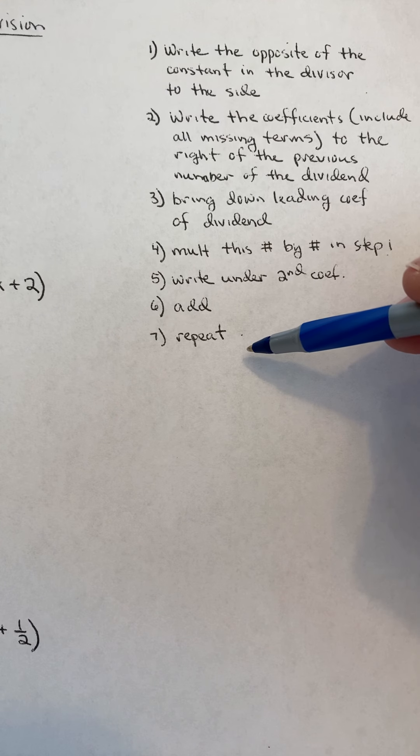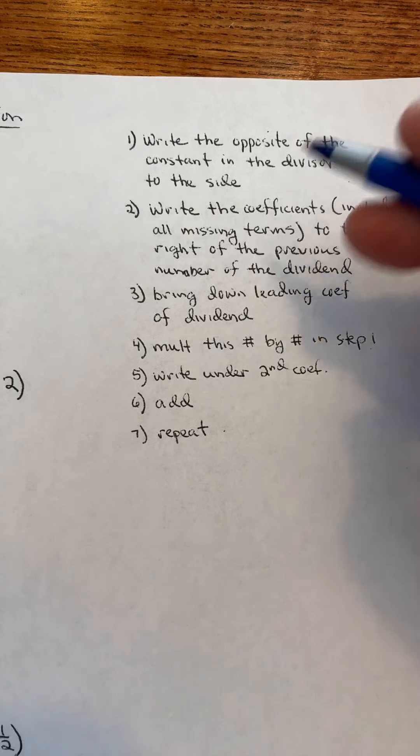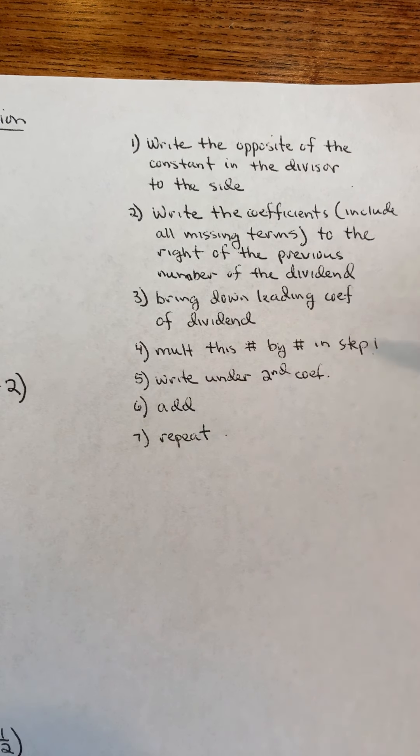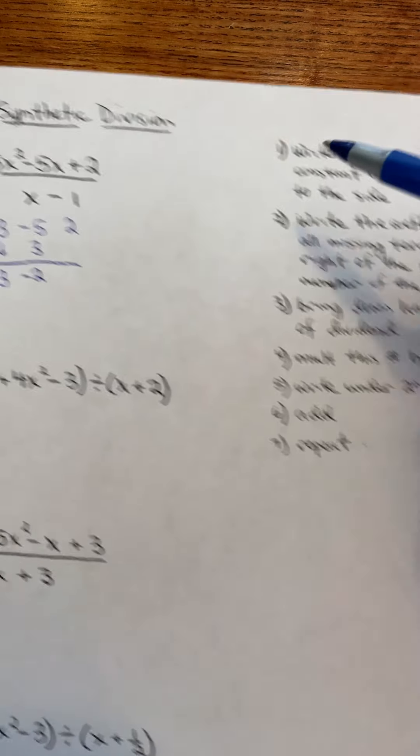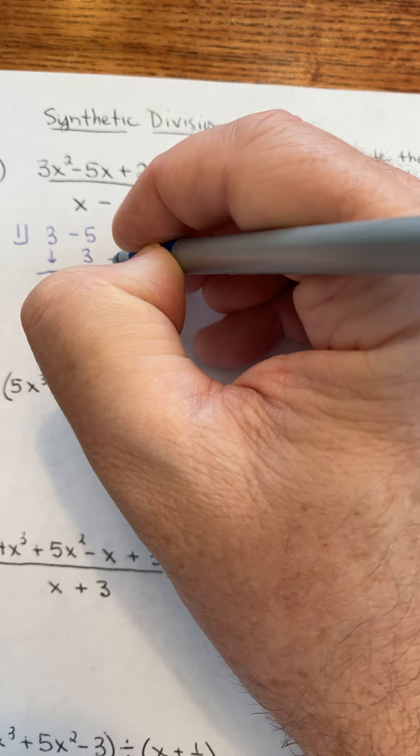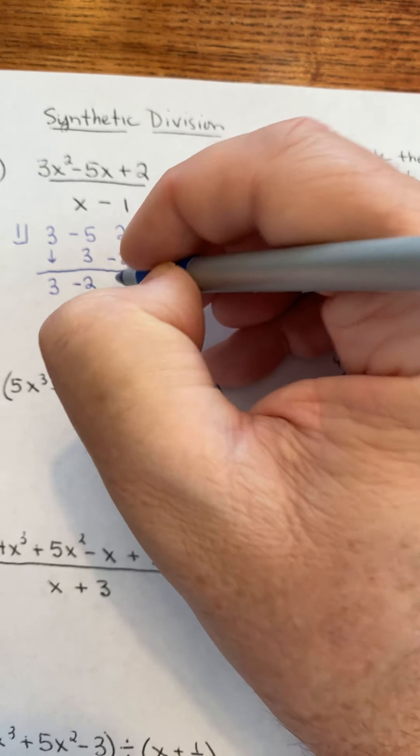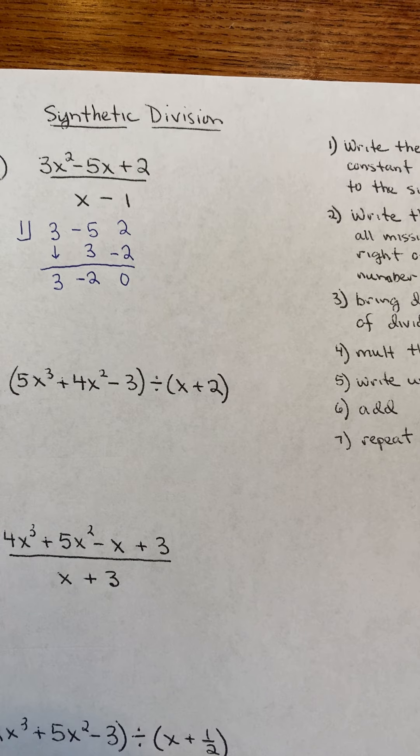And then repeat those same steps. So I'm going to multiply. Actually, I should repeat from 4 on. So multiply this number by the number in step 1. So negative 2 times the 1 is negative 2. Add those two things up. And basically, we're done. But now I want to write my answer.